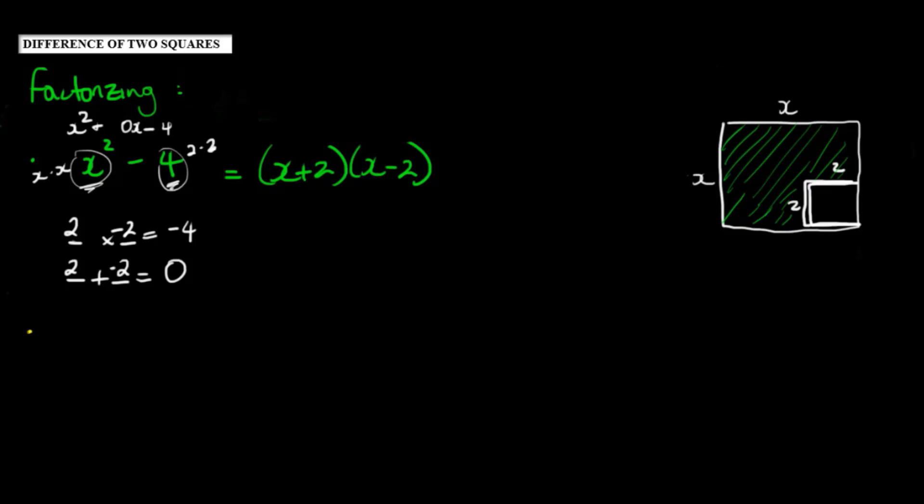In the next one, x squared minus 9, we would be looking for two numbers that multiply to give us negative 9 and two numbers that also add to give us zero since there's no x term there again.